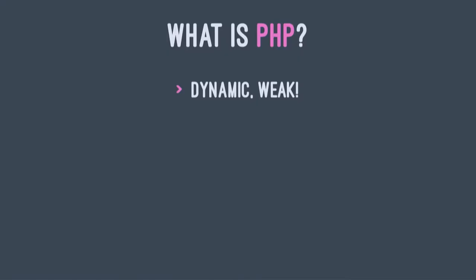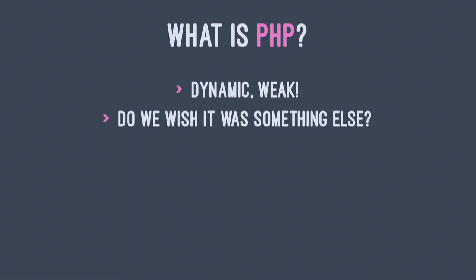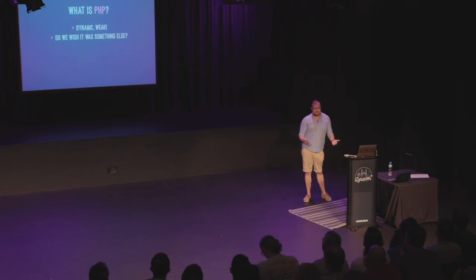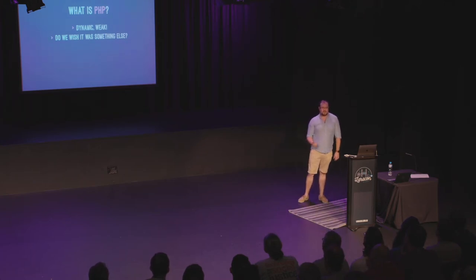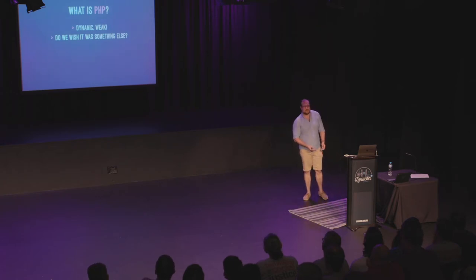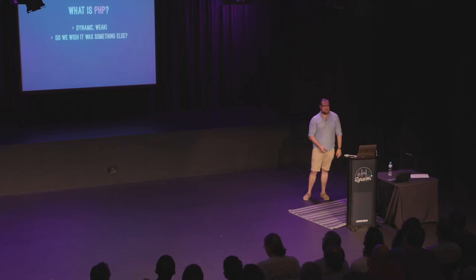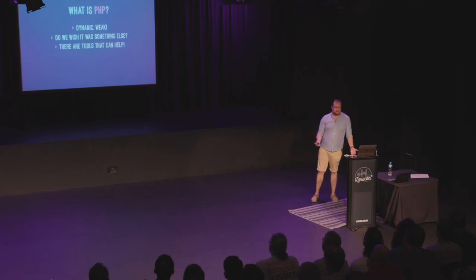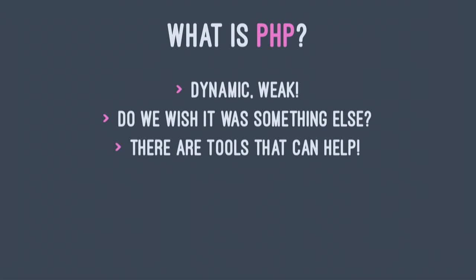So PHP — it's a dynamic weak language. There's been a lot of talk in the community to leverage types. We see RFCs coming into the language all the time to add more information around typing. PHP 7 gave us scalar type hints to define integers, strings, booleans as types in our variables, and also return type hints — saying I want this function to always return this type. PHP will complain at a language level if you don't do that. In PHP 7.4, we get more goodies around defining class variables up front with their types.